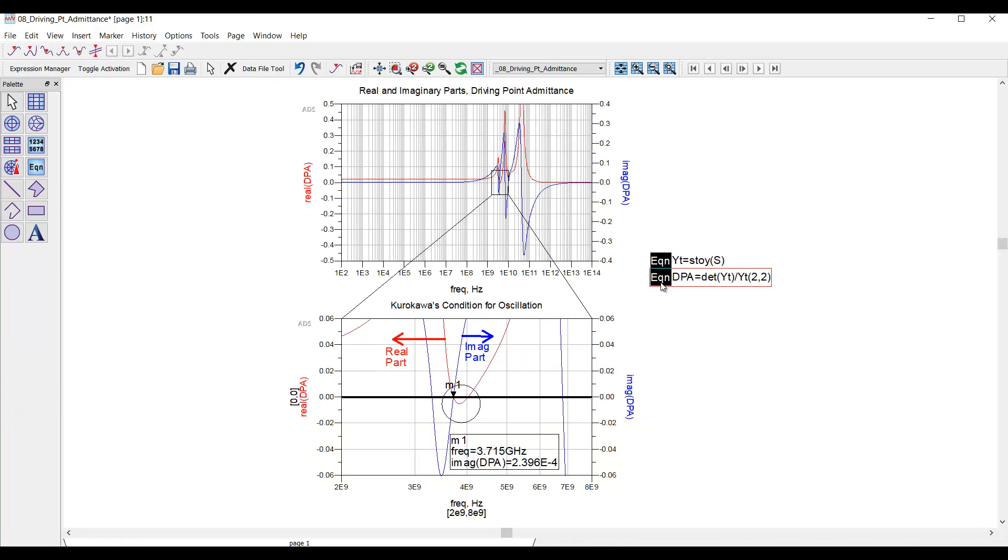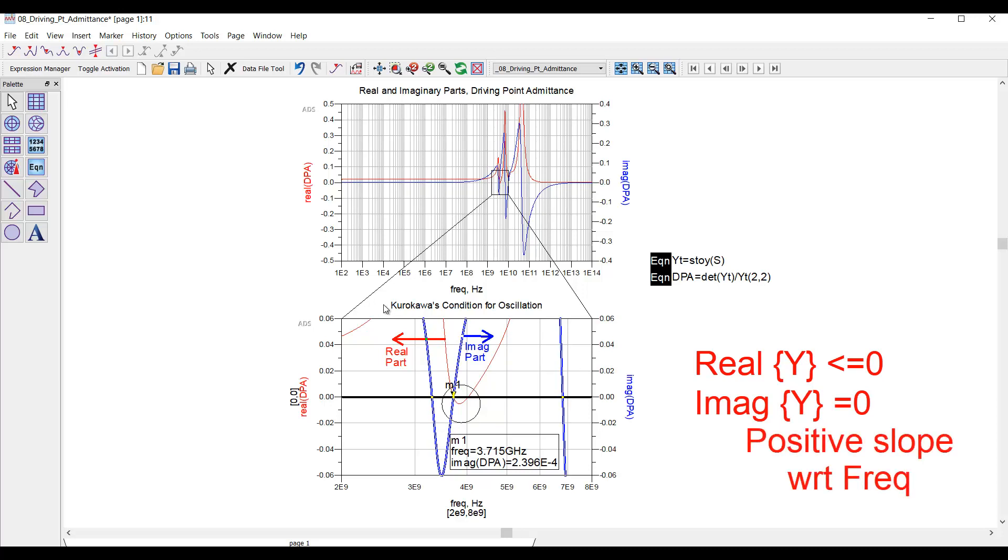Now, we analyze this result a little bit differently for stability. Instead of looking for circles and encirclements, we look for what's called Kurokawa's condition for oscillation, which is stated as follows. The real part of Y is less than or equal to zero. That means the impedance is infinite or negative. And also the imaginary part of Y equals zero. That means no energy is stored. One other caveat, the imaginary part of Y must also be positive sloped with frequency. That part has to do with Foster's reactance theorem. Anyway, in this example, we can look at the real and imaginary driving point admittances. And we see Kurokawa's condition at just about the same frequency that was circled by the return ratio, which is great because these two fundamental measures turn out to be consistent.